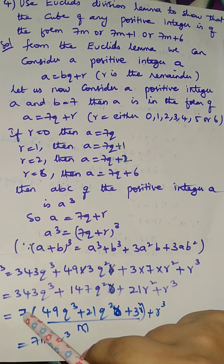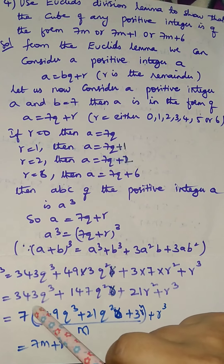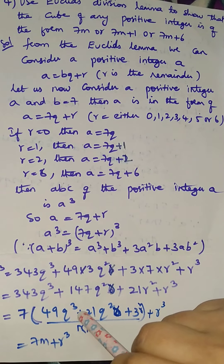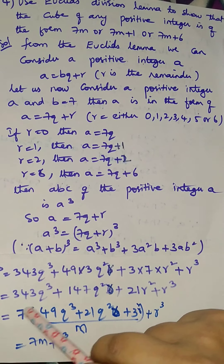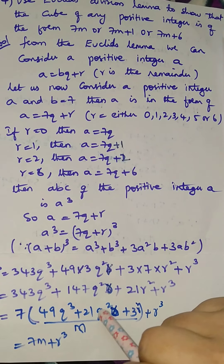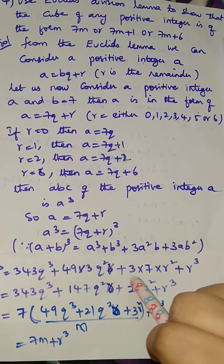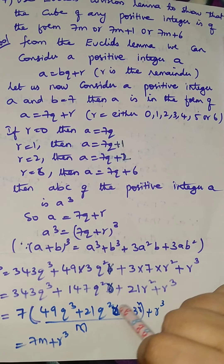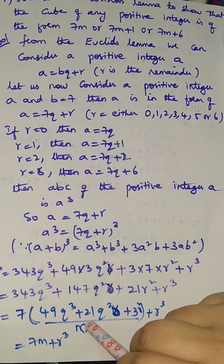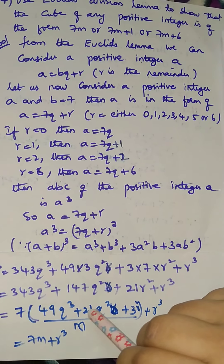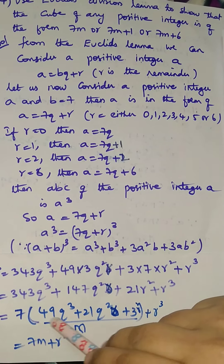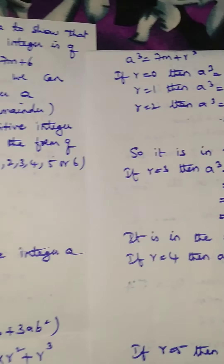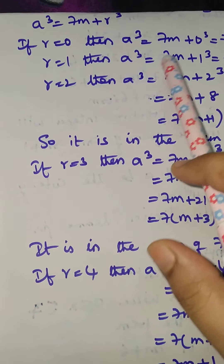Now we have to take 7 common: 7 into bracket 49q³ plus 21q²r plus 3r² plus r³. We consider the expression inside the bracket as m, so 49q³ plus 21q²r plus 3r² equals m. Now the answer is a cube equals 7m plus r³.